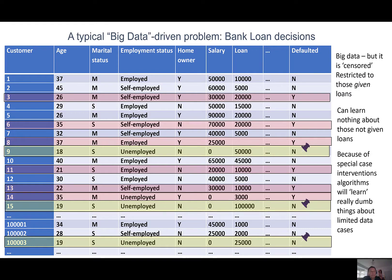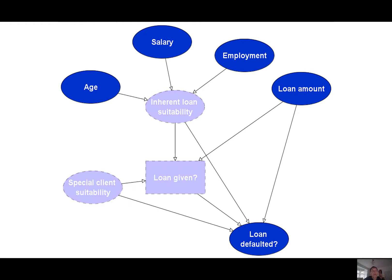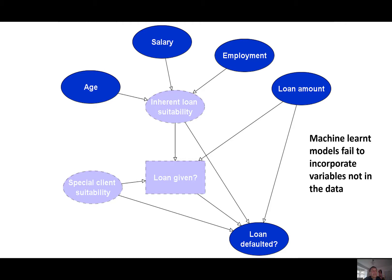Here's a graphical model which represents what all machine learning and statistical algorithms are essentially doing. They learn the target outcome as a function of the inputs for which they have data. So obviously they will learn things like people with higher salaries are less likely to default. But what the model can't learn is the impact of relationships involving unobserved variables. In this case, the variable 'loan given' was missing in the sense that we only had data for those given loans. We were also missing the special client information and latent variable 'loan suitability'.